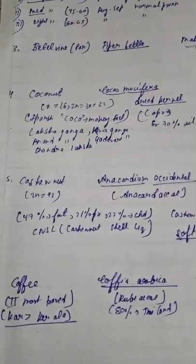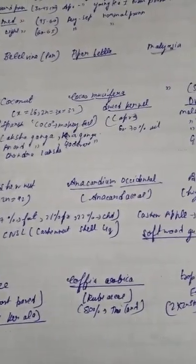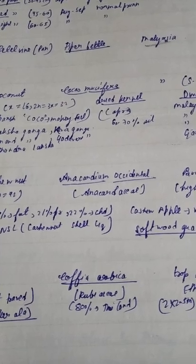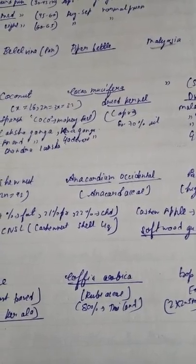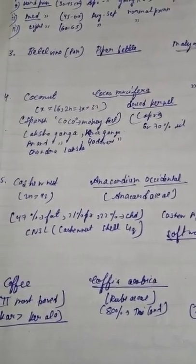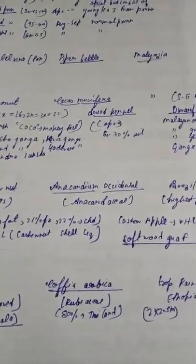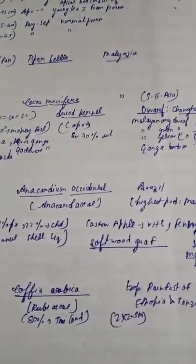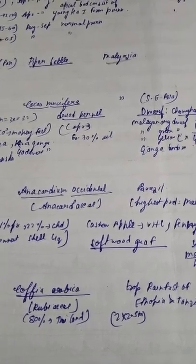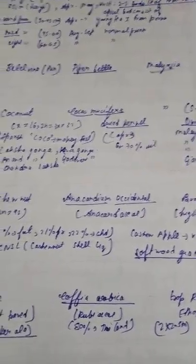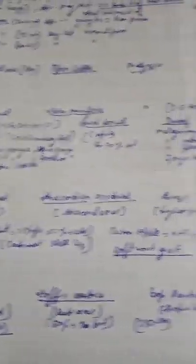Coffee family is Rubiaceae and the origin of coffee is the tropical forest of Ethiopia and Tanzania. Tea and coffee were asked in agronomy exam 2 years ago, so please remember these plantation crops. Cashew nut botanical name is Anacardium occidentale. It belongs to family Anacardiaceae, and the origin of cashew nut is Brazil.